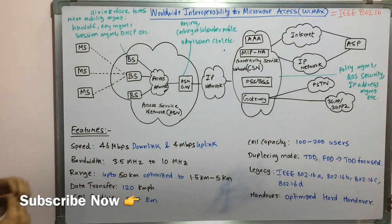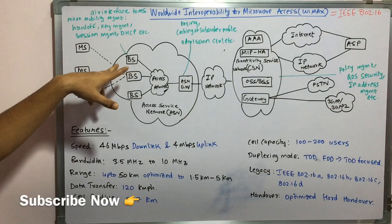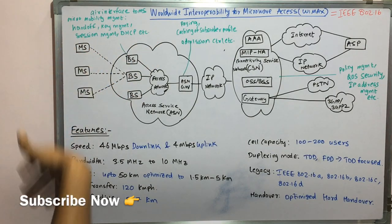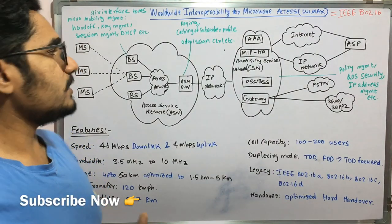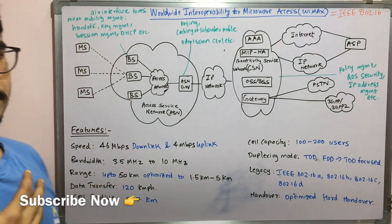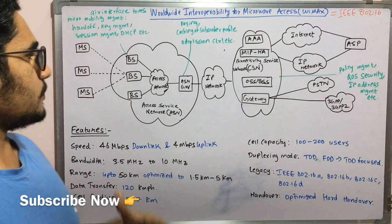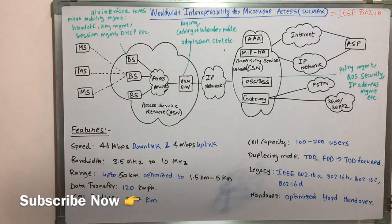So these mobile stations are connected to base stations via this air interface. Base stations mainly provide an air interface to mobile stations and also participate in some kind of micro mobility management which provides handoff, then key management, some translations, then session management, dynamic host configuration protocol, resource management. Many functionalities are provided by these base stations.